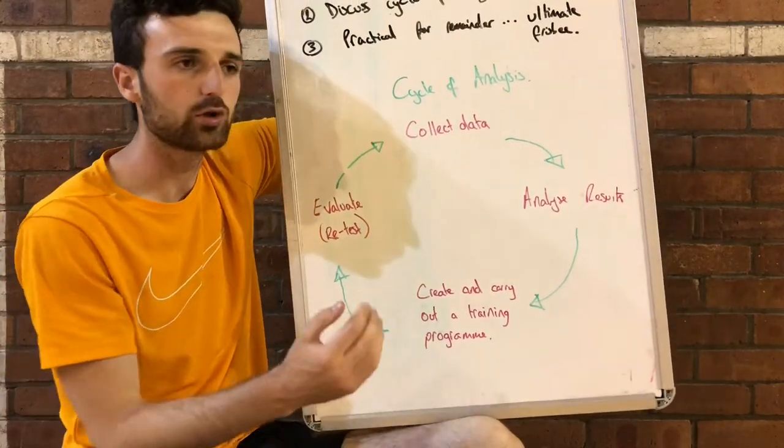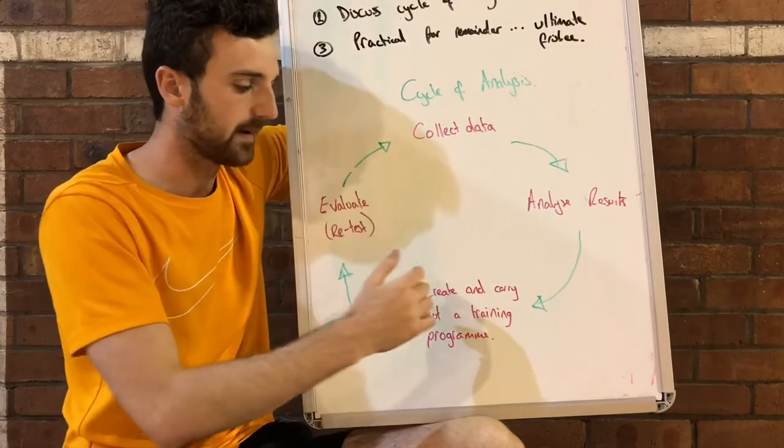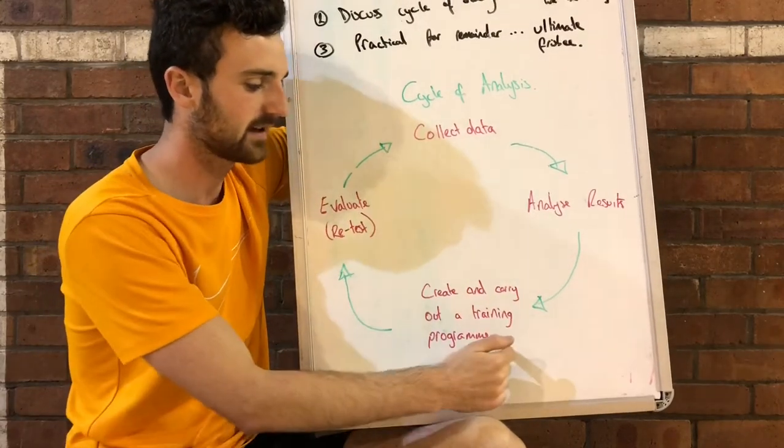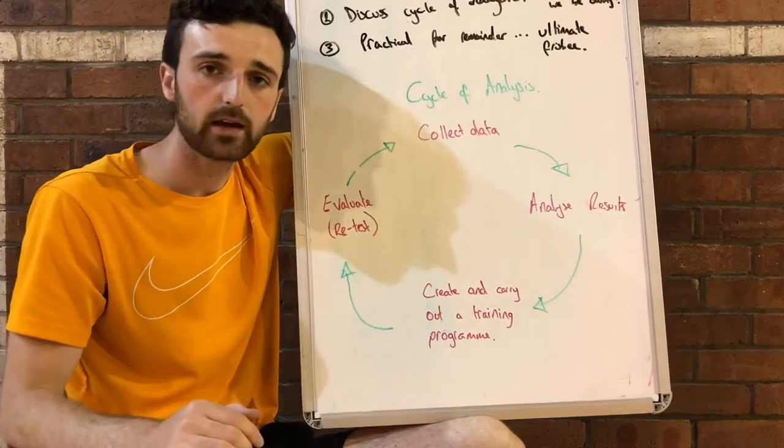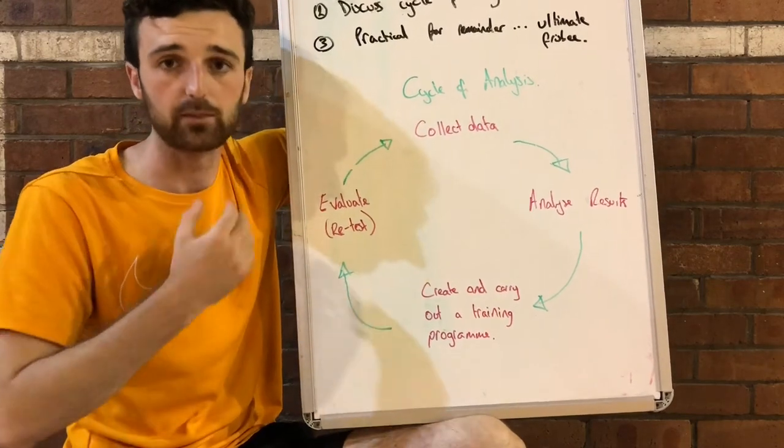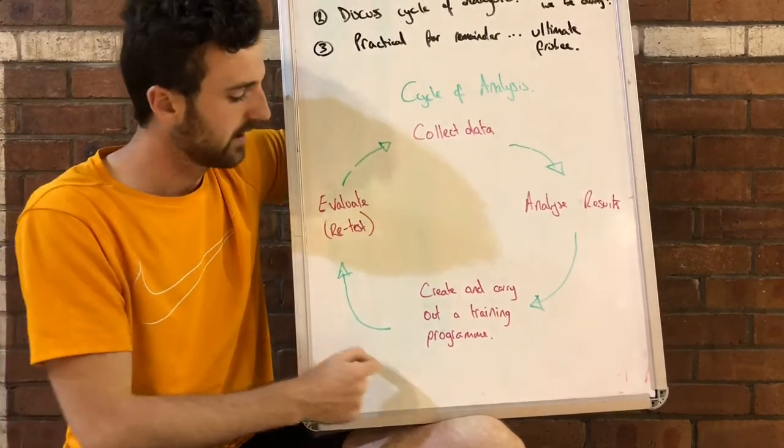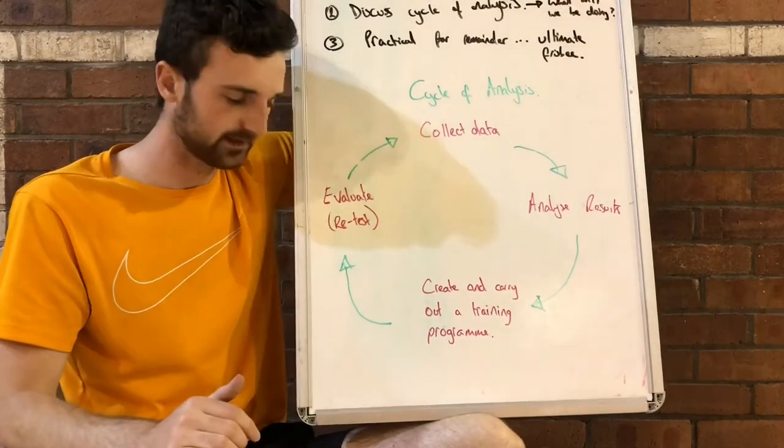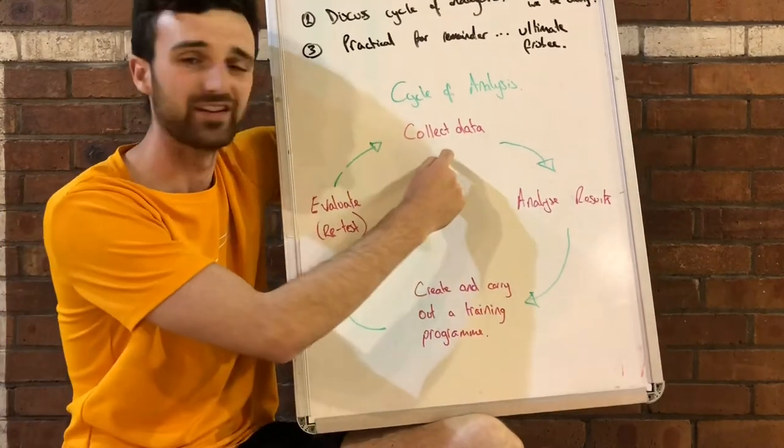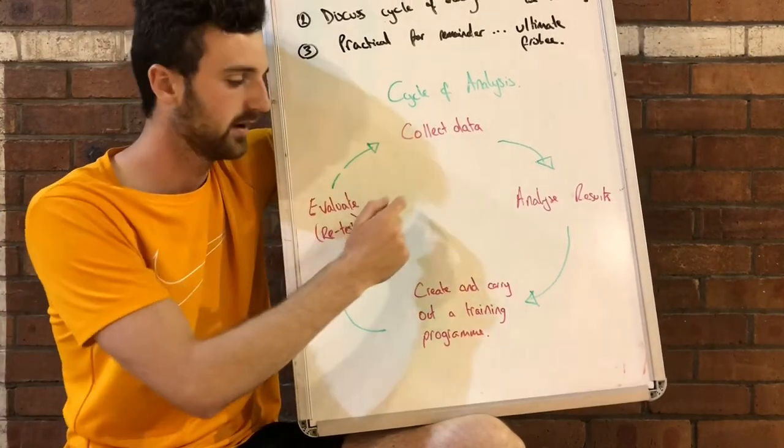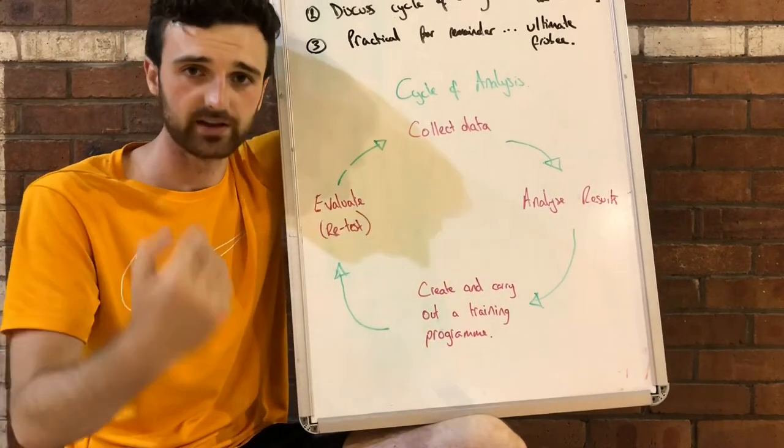We'd work out how good, how bad we were at it. And from there, we would create and carry out a training programme. And that would involve different ways which would improve our CRE. And finally, we would evaluate. So that might involve retesting, where we would carry out the same test that we did to begin with to retest and see if our score is higher.